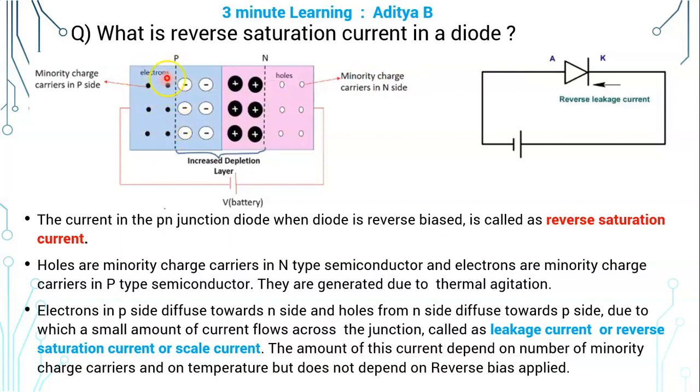In the P side, electrons are minority carriers and holes are majority carriers because electrons are very less in number when compared to the holes. Likewise, in the N side, holes are the minority carriers and electrons are the majority carriers because these holes are very less in number when compared to the electrons.